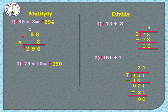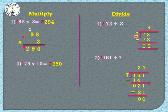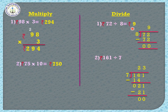Now divide: rupees 72 divided by 8. 72 is the dividend and 8 is the divisor — 72 inside the bracket, 8 outside. Check the 8 times table: how many 8's in 72? 8 nines are 72. Subtract: 2 minus 2 is 0, 7 minus 7 is 0. The answer is rupees 9.